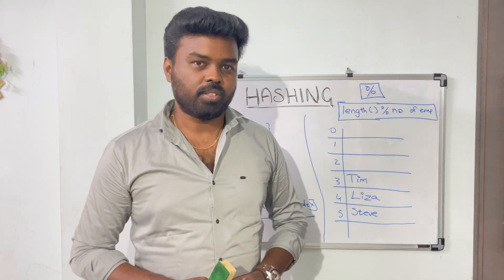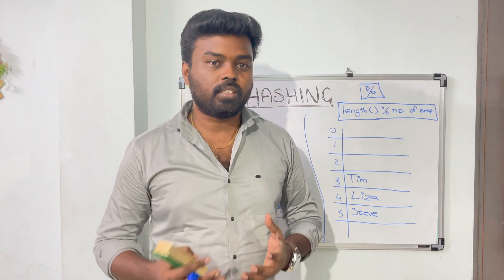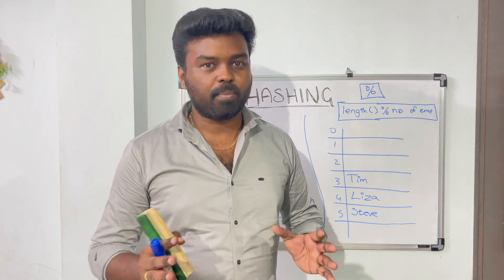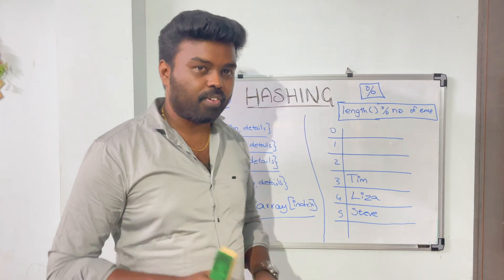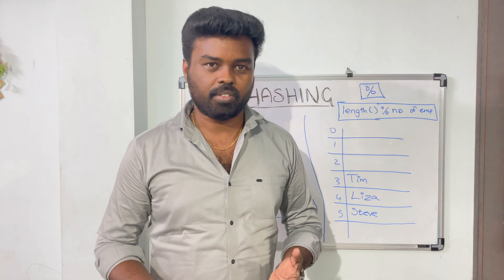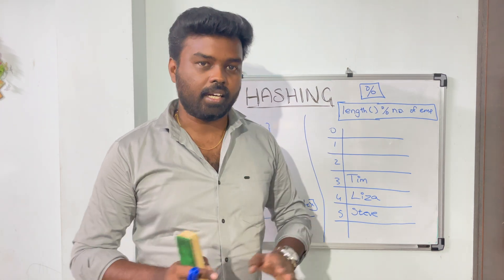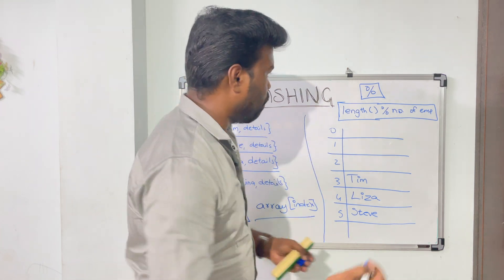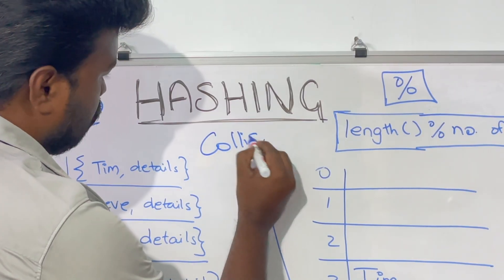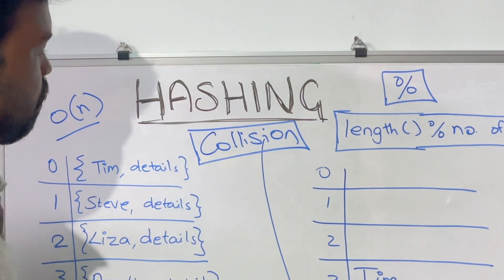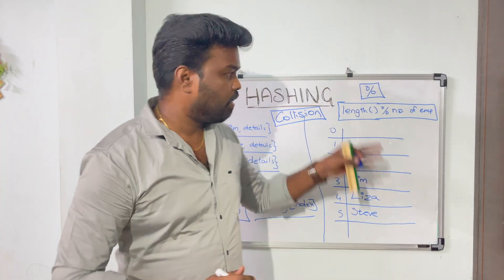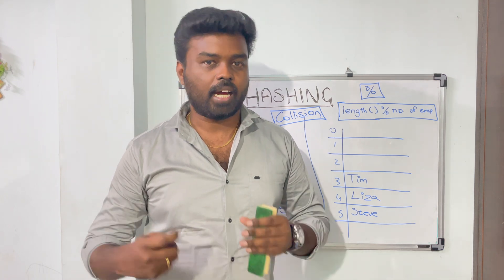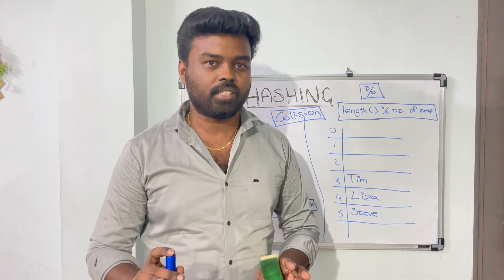There are some other issues in this approach: sometimes the hash function could produce the same value for different employees. Because there is a lot of possibility that two or more employees can have the same number of characters in their name. So if two employees have five characters, our hash function will return the same hash code, and we end up inserting both employees into the same index in the array. This is a normal occurrence in hashing, and this phenomenon is what we call a collision. The more advanced your hash function is, the fewer collisions will happen. Length is a very primitive hash function, so you will definitely face a lot of collisions. But if you use an advanced hash algorithm, the number of collisions will be reduced. An ideal hash function will have no collisions at all.